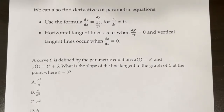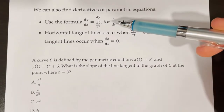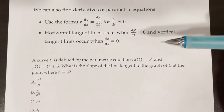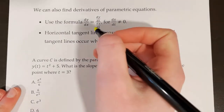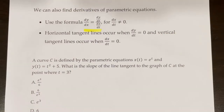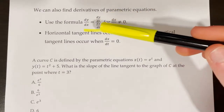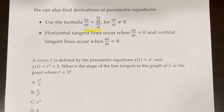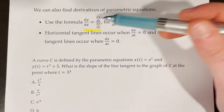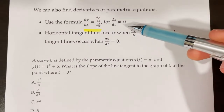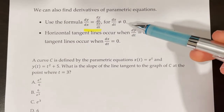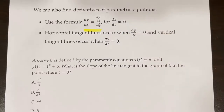We can also find the derivatives of parametric equations. To find parametric derivatives, we use the formula dy/dx = (dy/dt) / (dx/dt). This is important because our equations are now in terms of t, so we take dy/dt and divide by dx/dt to get dy/dx. This is only valid when dx/dt ≠ 0, because if dx/dt = 0, we'd be dividing by zero.